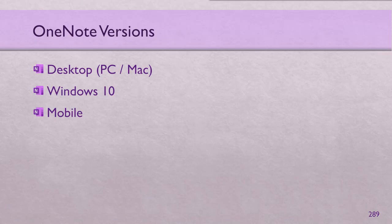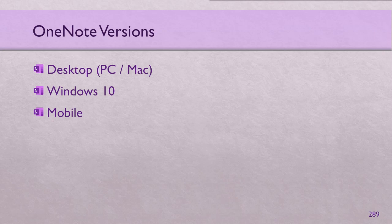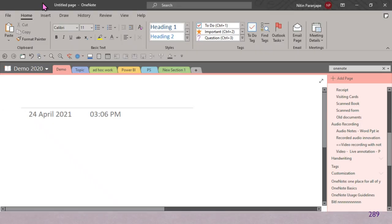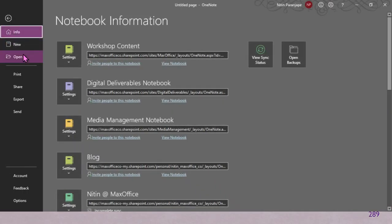On iOS, iPad, and Android there are versions on all mobile platforms. When you install OneNote there is one notebook by default, but don't use that — it's just a help file in the form of OneNote. Read it, understand it, but you should create more notebooks. How do you create more notebooks? Very easy — go to File > New and create notebooks. Always create notebooks on the cloud, typically OneDrive.